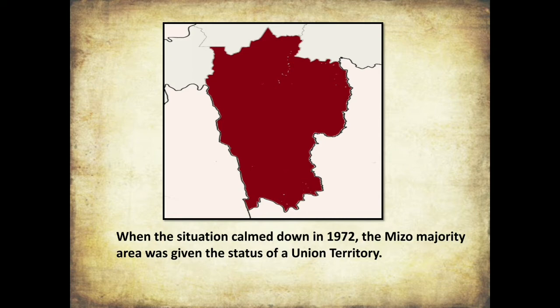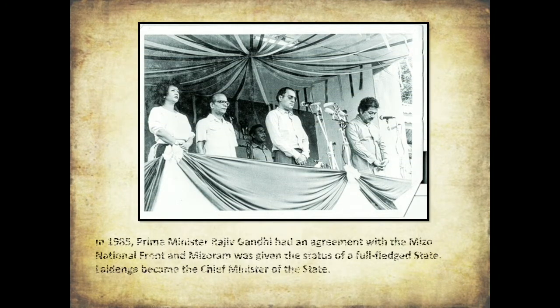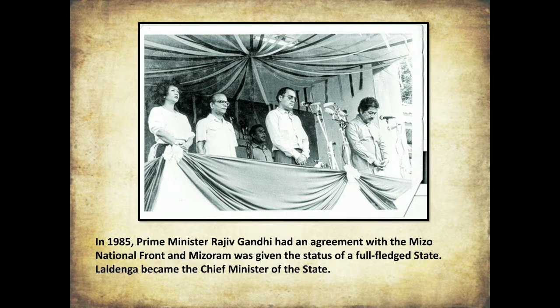In 1985, Prime Minister Rajiv Gandhi reached an agreement with the Mizo National Front, and Mizoram was granted the status of a full-fledged state. Laldenga became the Chief Minister of the state. His efforts in improving the status and living conditions of the people of Mizoram cannot be ignored.